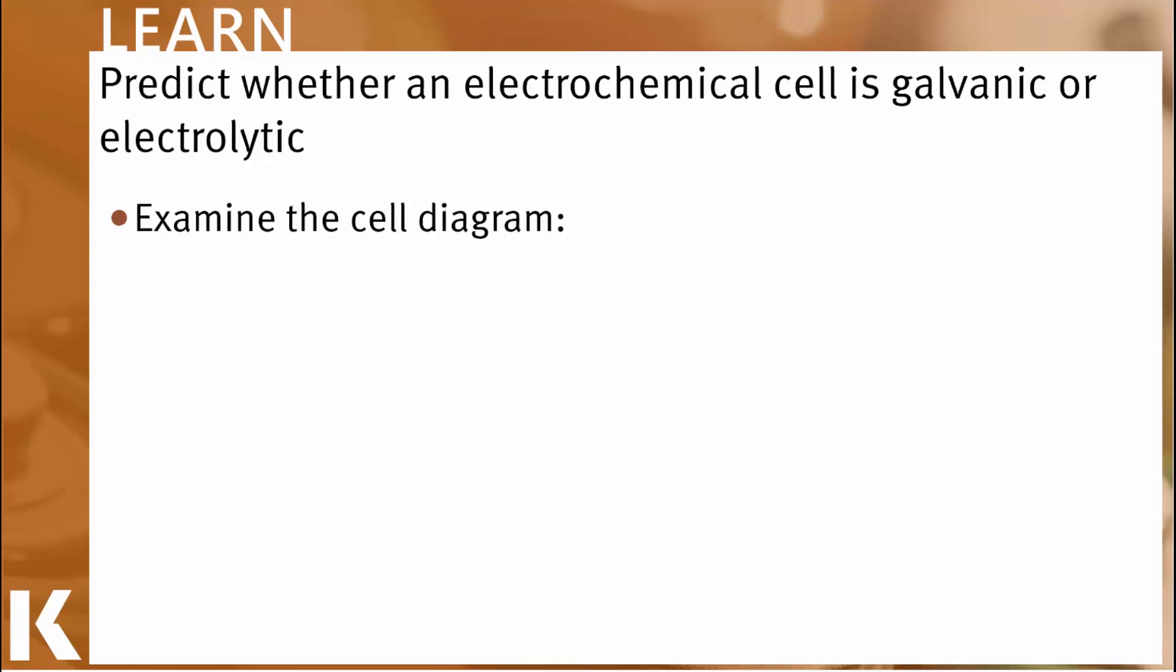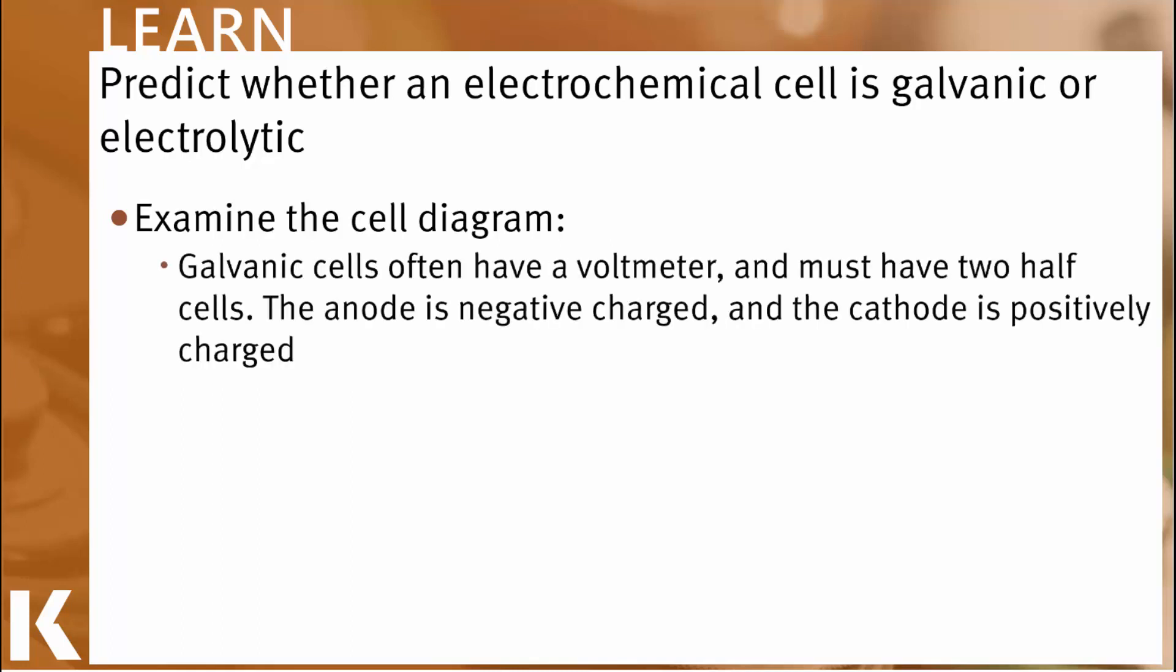The other approach we can take is to examine all the information that we have in the cell diagram. For example, galvanic cells often have a voltmeter. They don't have to, but because they produce voltage, there's often a voltmeter to indicate just how much they're producing. They certainly must, however, have two separate half cells. And the very key diagnostic piece of information for a galvanic cell is that the anode is negatively charged and the cathode is positively charged.